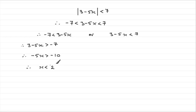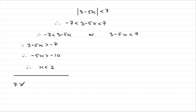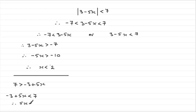You didn't have to do it that way — you could have multiplied throughout by negative 1. If you multiply minus 7 by minus 1 you get plus 7, but because you're multiplying by a negative number you must turn the inequality around. So you get 7 is greater than minus 3 plus 5x. Swapping round: minus 3 plus 5x is less than 7. Adding 3 to both sides gives 5x is less than 10. Dividing by 5 gives x less than 2 — obviously the same result, just another version.